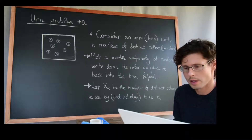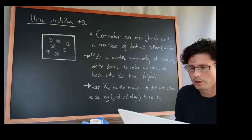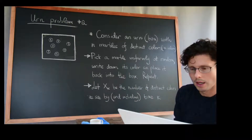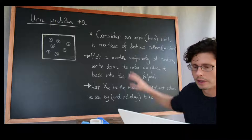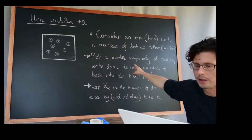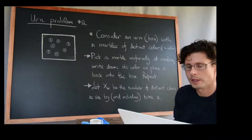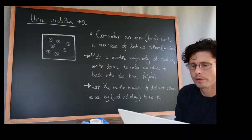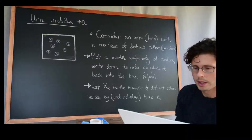I'm going to call this urn problem number two. We picture an urn — or you can think of it as a box, just like I've drawn here — and this time there are n marbles of different colors. There are n marbles with n distinct colors, each marble has its own color. Because I don't have different colors of chalk, I've just labeled them colors one through seven.